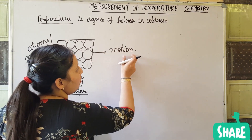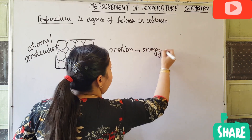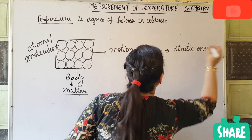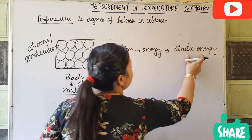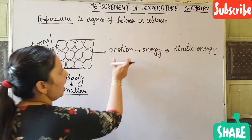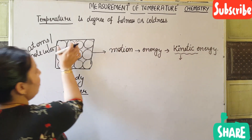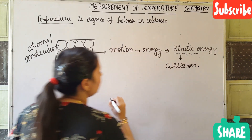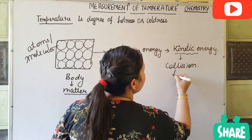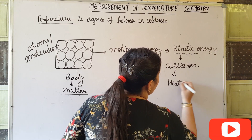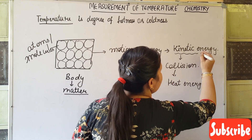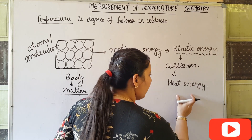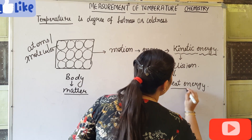When particles are in motion, they possess some energy. That energy is known as kinetic energy — when a body is in motion, it possesses kinetic energy. Now, if a body has kinetic energy, the particles will collide with each other. When these particles collide, this kinetic energy is converted into heat energy. As we know, energy is conservative in nature — we can convert one form of energy to another. So here, kinetic energy is converting into heat energy.